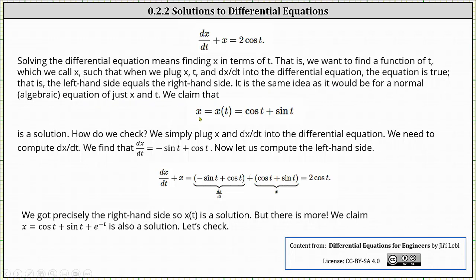We claim x equals x of t equals cosine t plus sine t is a solution. How do we check this? We simply plug x and dx/dt into the differential equation. We need to compute dx/dt. We find that dx/dt is equal to the derivative of cosine t plus sine t, which is negative sine t plus cosine t.